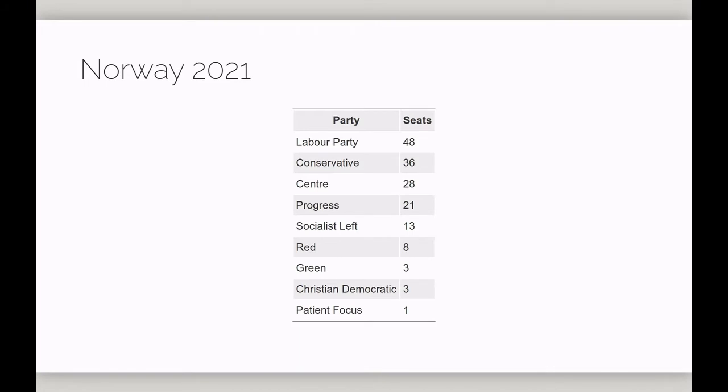The largest party, the Labour Party, won 48 seats. The smallest party, Patient Focus, just one seat. Now we could say that Norway has a 10-party system, but it seems strange to count Patient Focus in the same way as the Labour Party.